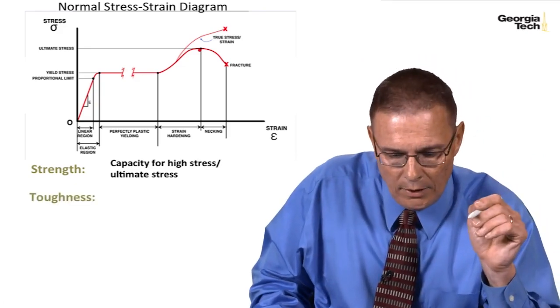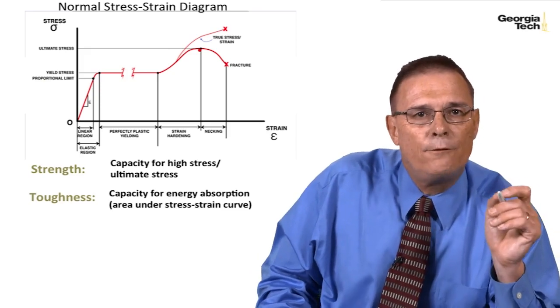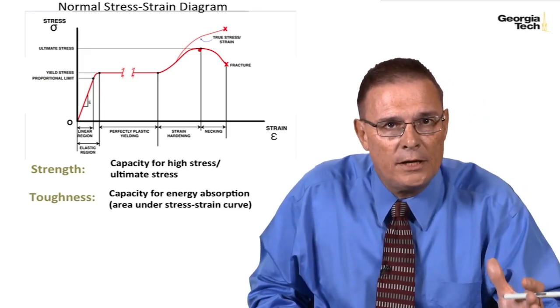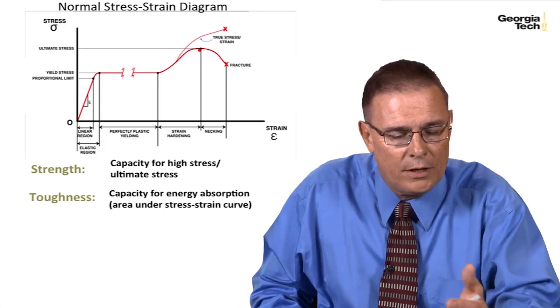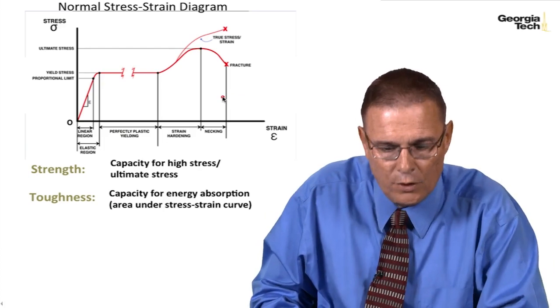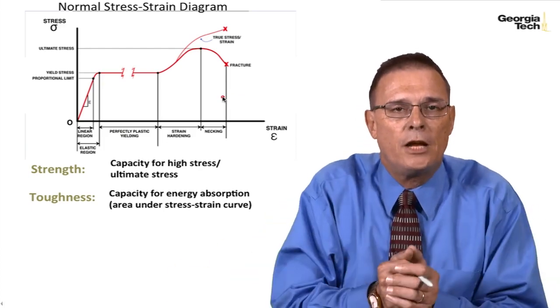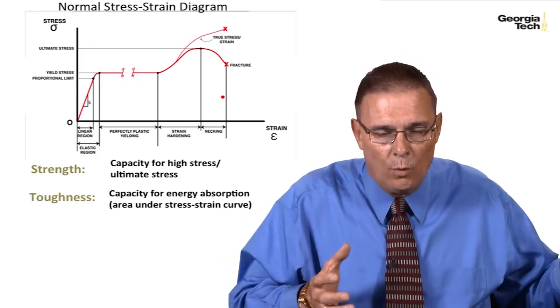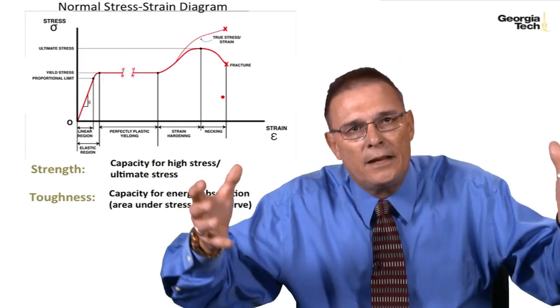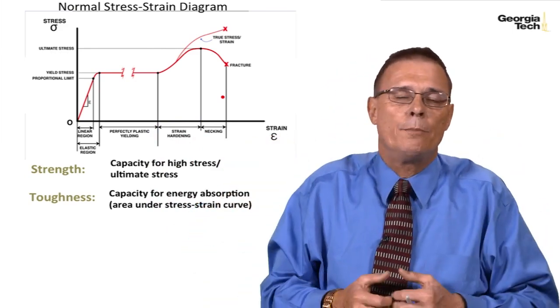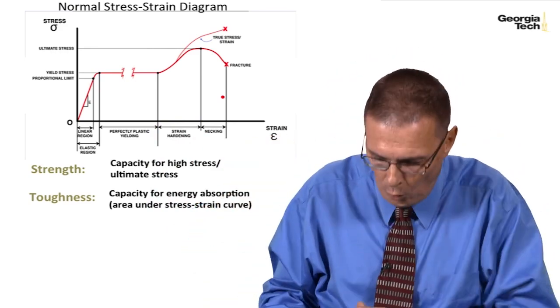Next we talk about toughness, which is the capacity for energy absorption. It can be shown that the energy absorption is the area under the stress-strain curve. So the more area we have under the stress-strain curve, the more energy can be absorbed. An example of this might be like a guard rail, where you want it to deflect a lot, take a lot of stress, and take out the energy, or maybe a barrier at a toll booth.